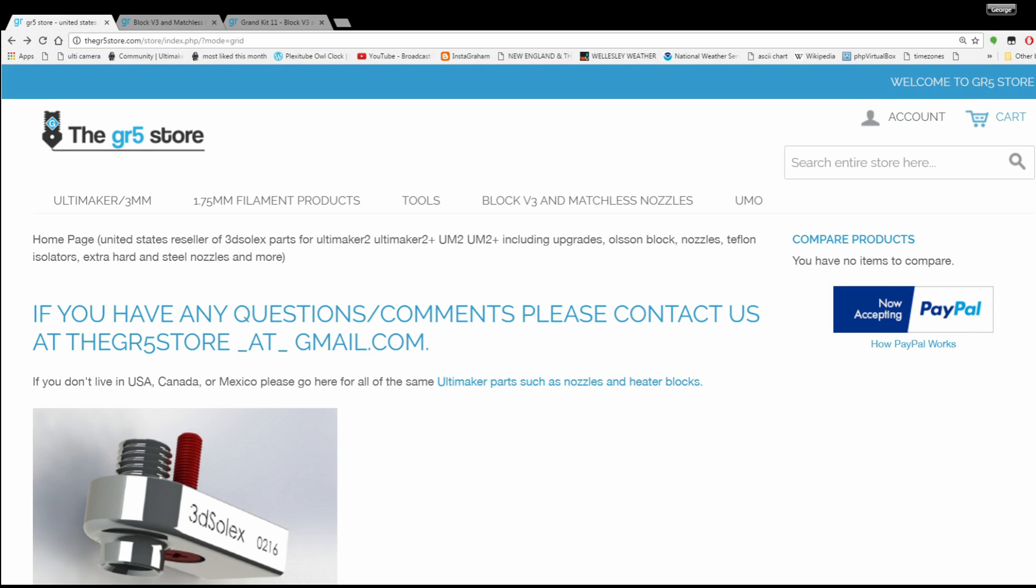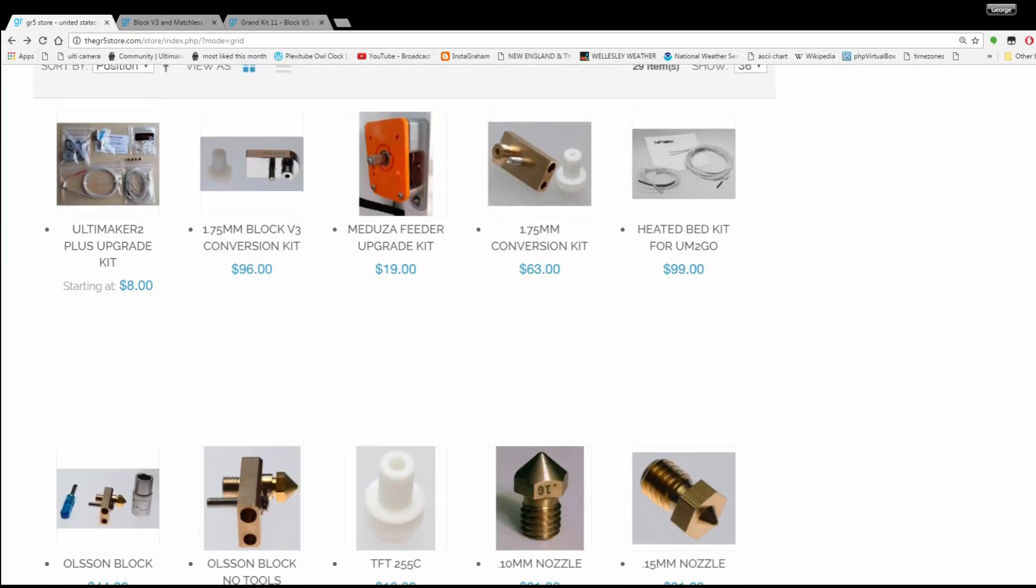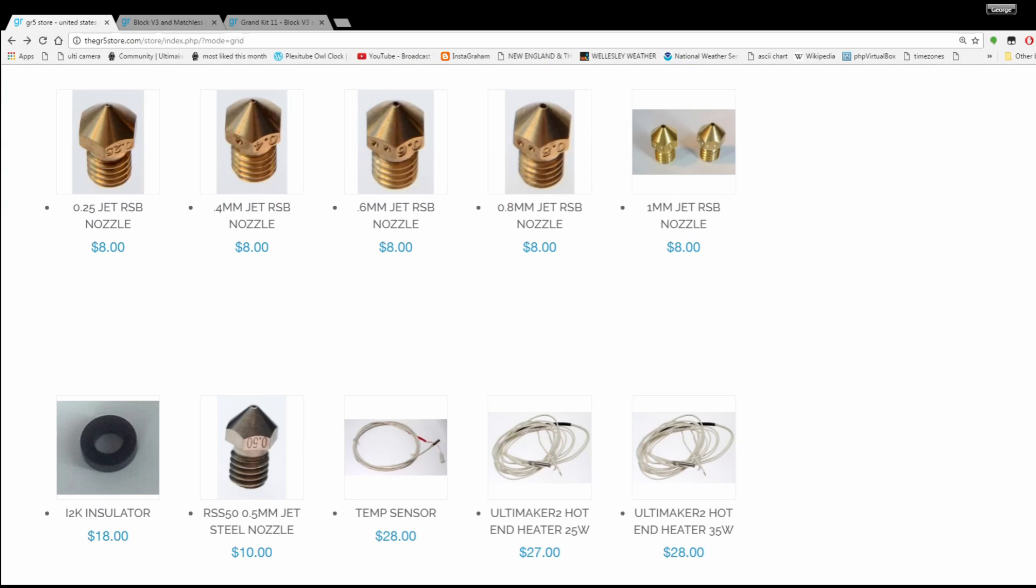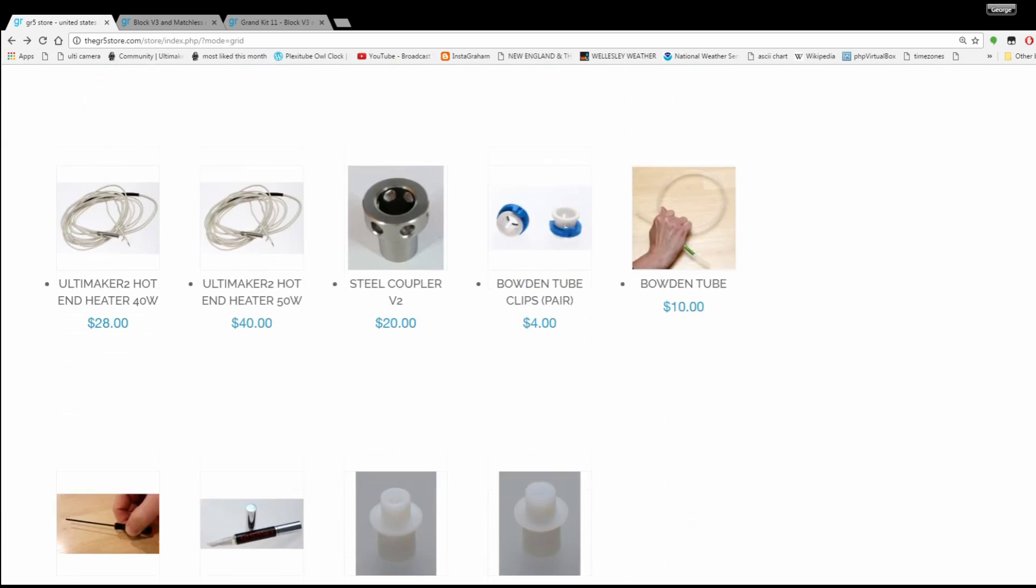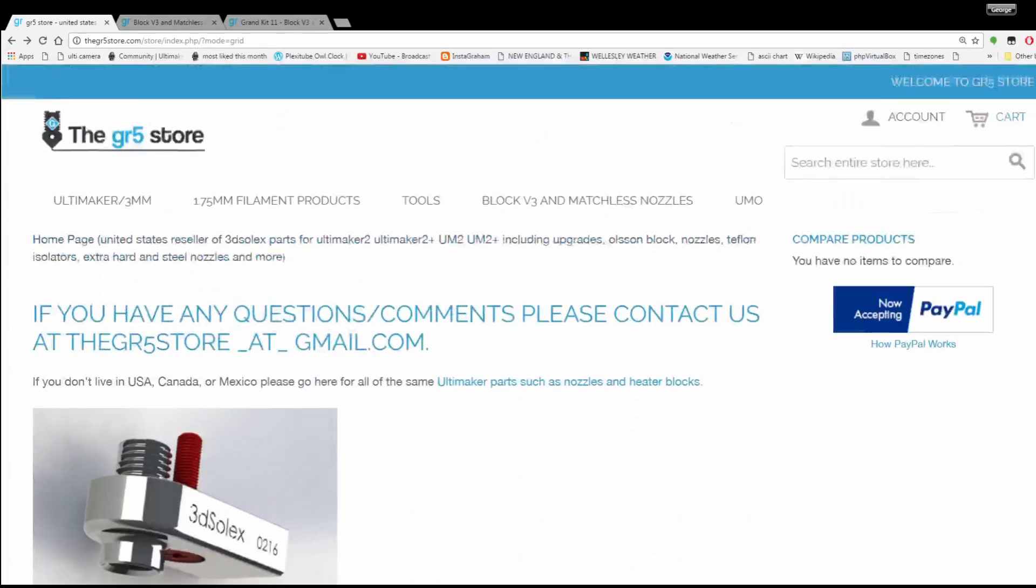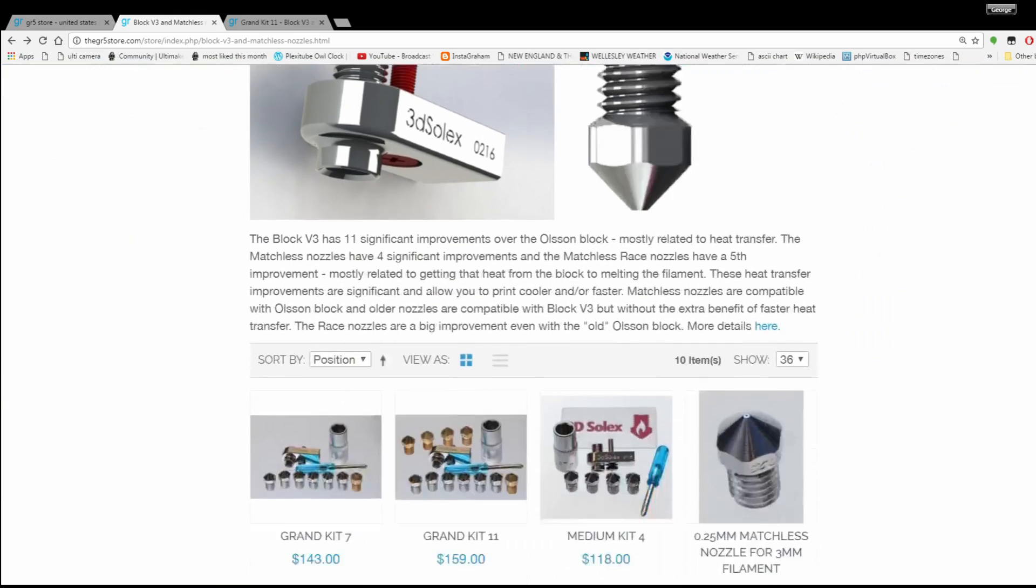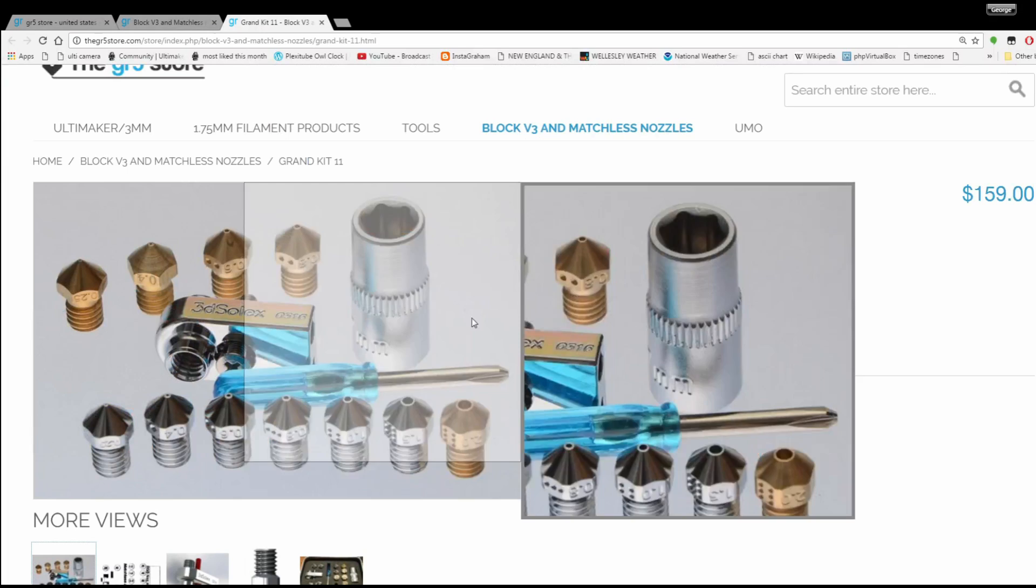As a hobby, I own a store that sells nozzles for most 3D printers and I sell other parts for Ultimaker printers. There's a link to it down in the description below, the gr5store.com. Thanks for watching and give me a like but only if you think this video might help other people.